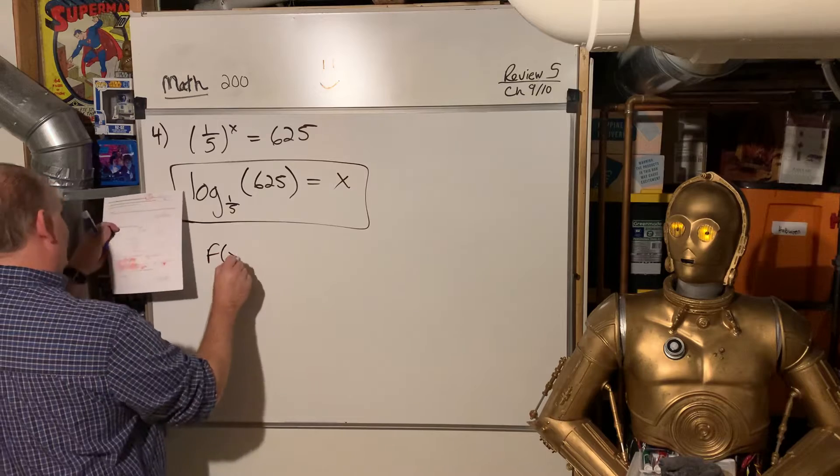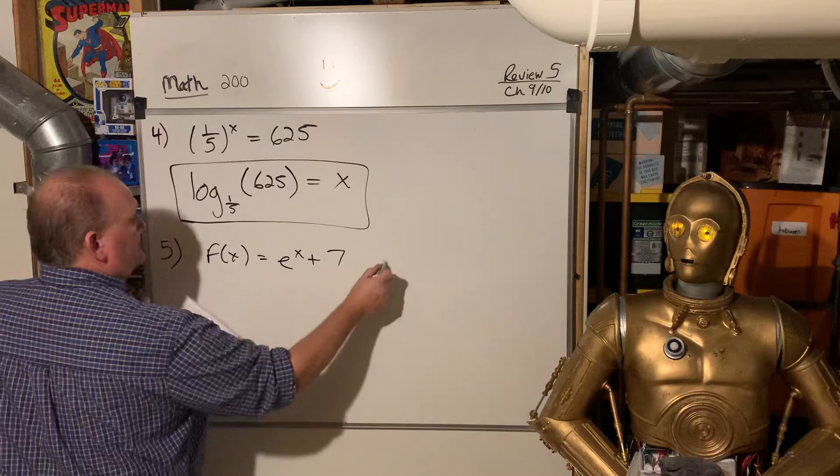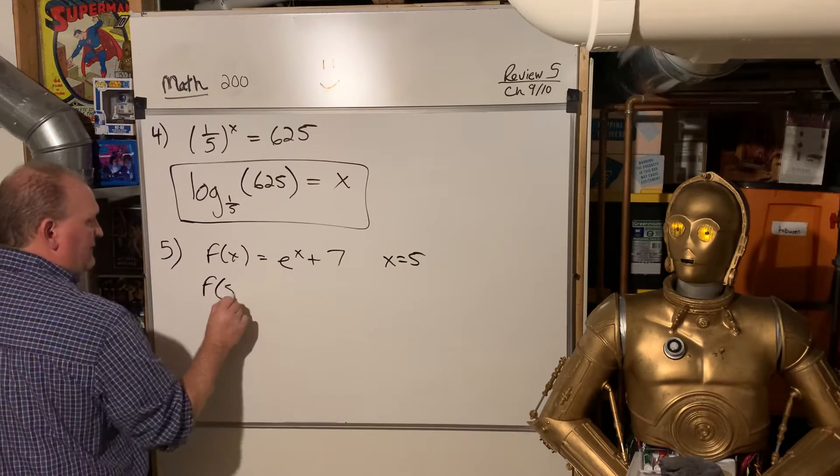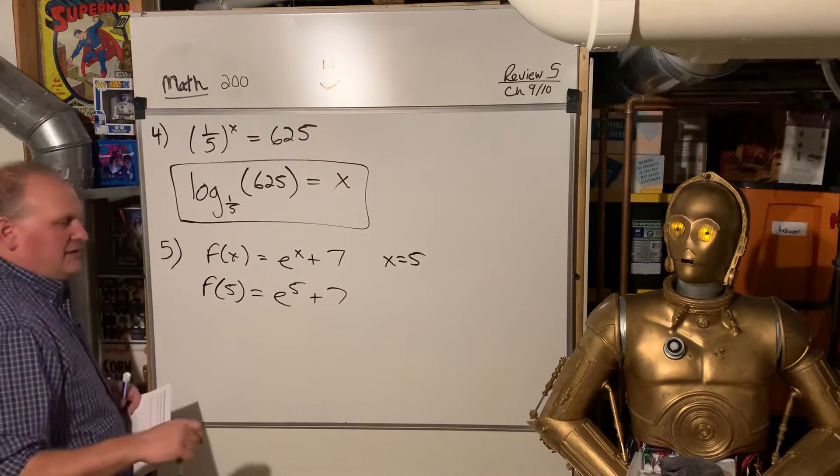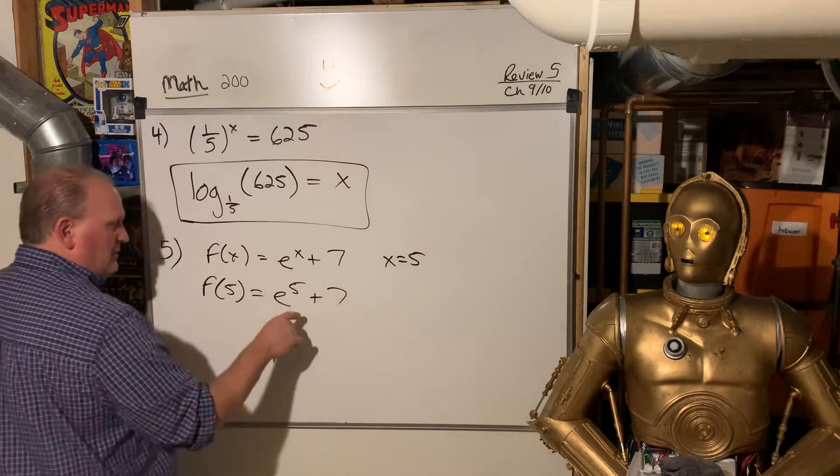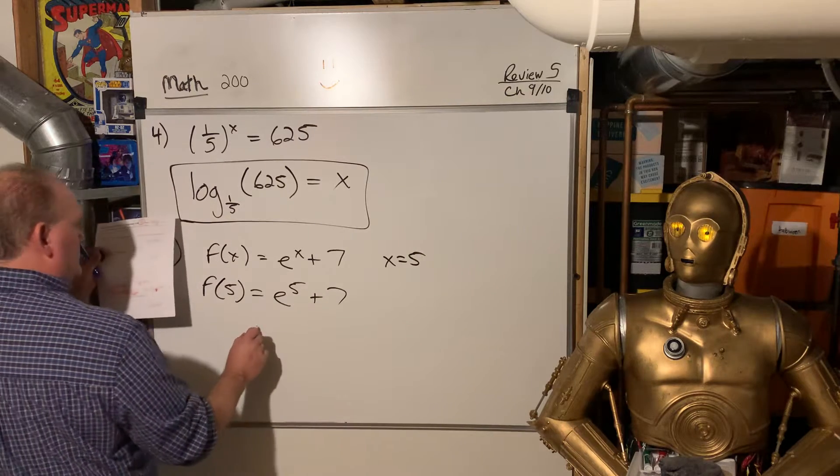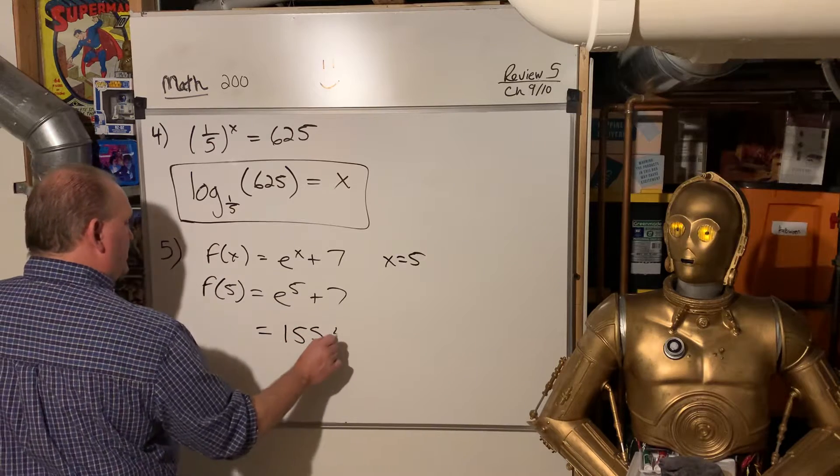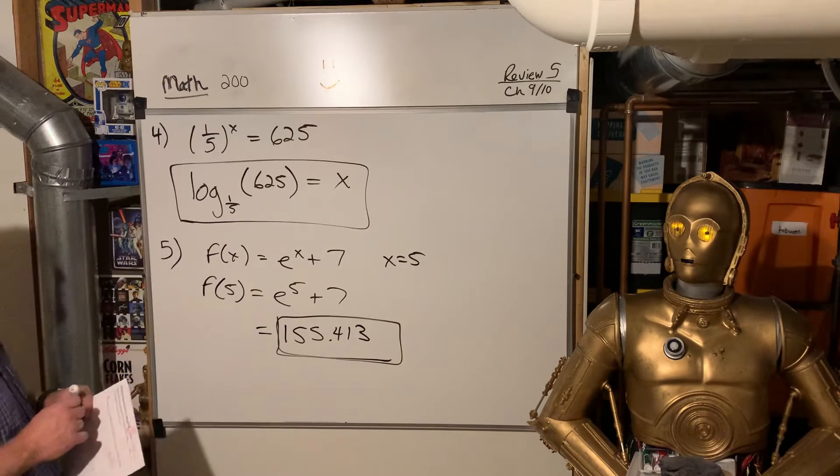Number 5. F of X is equal to E to the X plus 7. And it says evaluate when X is 5. So they basically want us to find F of 5. It's E to the 5th power plus 7. You put this in your calculator, that is LN, second LN. That will be E to the power of 5, hit enter and then plus 7. Round to three decimal places: 155.413. That's the answer for 5.